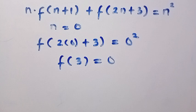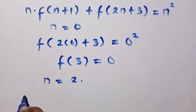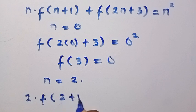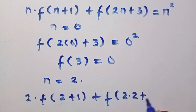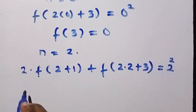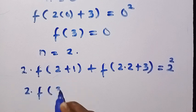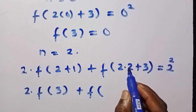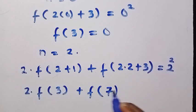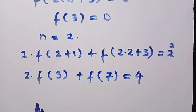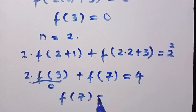To reapply this result, I'm going to let n equal 2. Applying the same formula, we have 2 multiplied by f of 2 plus 1, plus f of 2 times 2 plus 3, equals 2 squared. That is 2 multiplied by f of 3, plus f of 7, equals 4. But f of 3 equals 0, so 2 times 0 becomes 0, and we only have f of 7 equals 4.